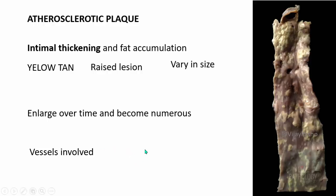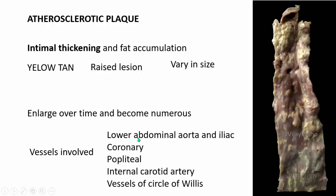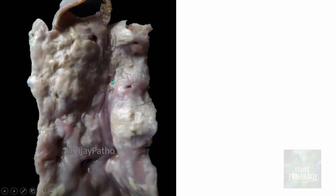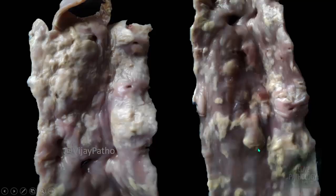The vessels involved in descending order of frequency are the lower abdominal aorta and iliac arteries, then the coronary blood vessels, then the popliteal, internal carotid artery, and the vessels of the circle of Willis. Here is a higher magnification view of the same blood vessel — you can easily make out the yellowish-tan raised lesions throughout the vessel. Some are small; some have coalesced to form larger masses. These are the atherosclerotic plaques.